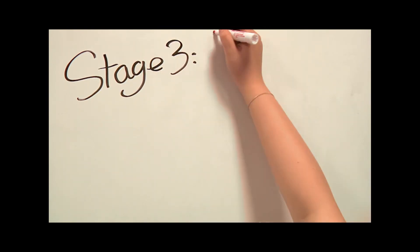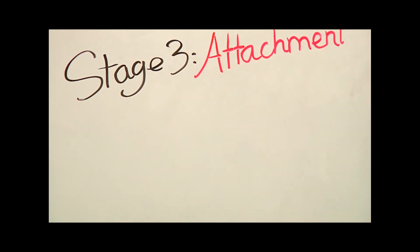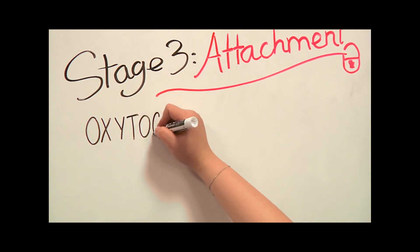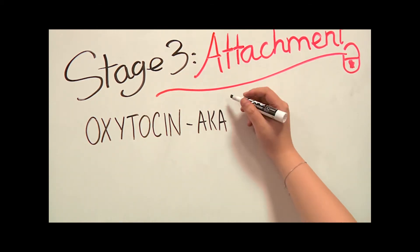Stage 3: Attachment. Attachment is the bond that keeps couples together long enough for them to have and raise children. Scientists think that there might be two major hormones involved in this feeling of attachment: oxytocin and vasopressin.